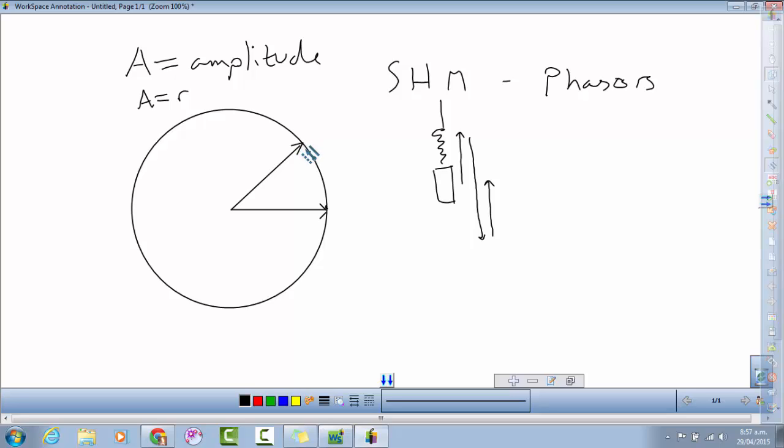So the phasor will move through a certain number of degrees. If I just consider that the mass has now moved to this position, then the radius hasn't changed but the vertical displacement is represented by this little red line here. So if I draw on a red line, that would represent the vertical displacement of the mass at that time.